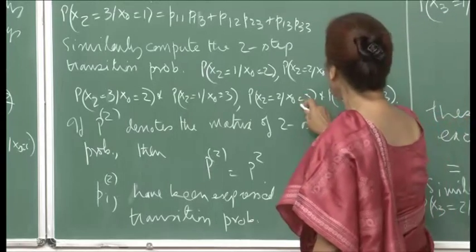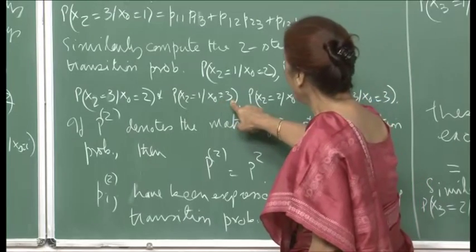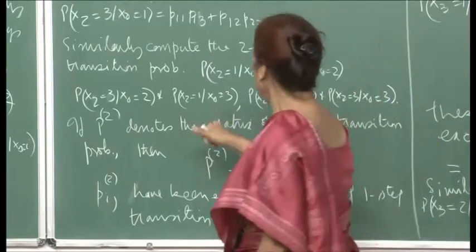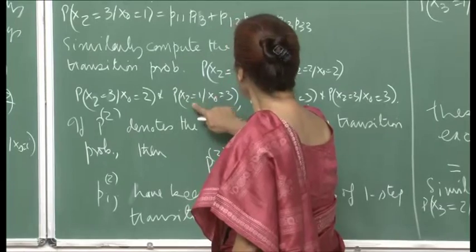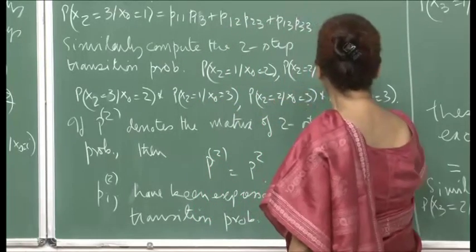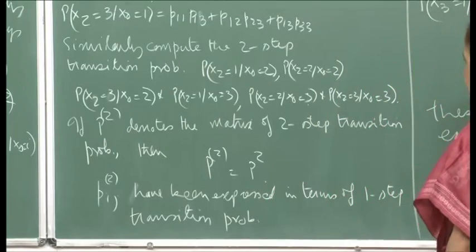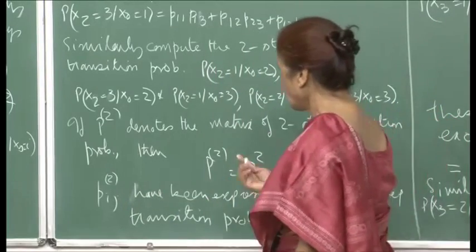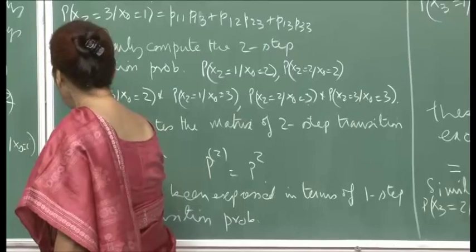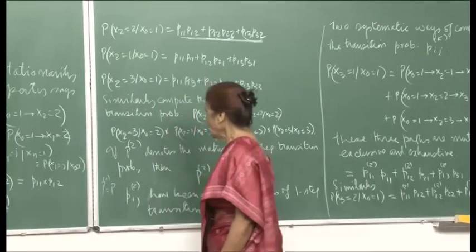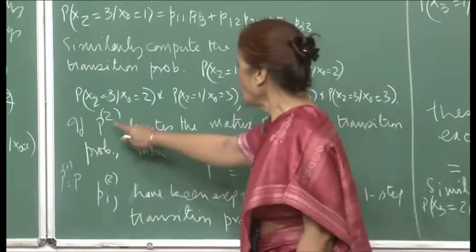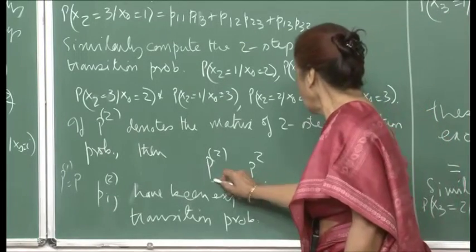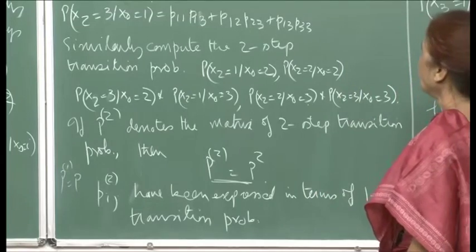Let p⁽²⁾ denote the matrix of two-step transition probabilities. Just as p — we are not writing p⁽¹⁾, it is understood p⁽¹⁾ is p — this is a transition matrix of one-step transition probabilities. Let p⁽²⁾ denote the matrix of two-step transition probabilities. We will quickly notice that p⁽²⁾ is actually p squared.